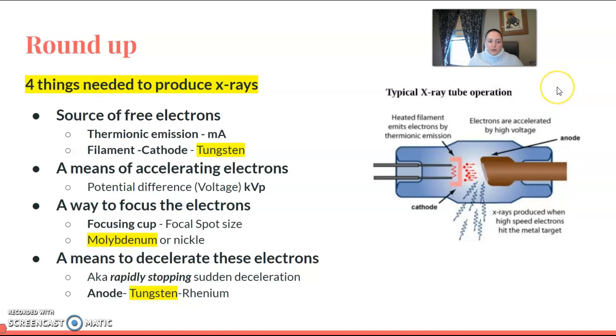So that's where we're starting. We need four things: a source, which is our filament at the cathode end (thermionic emission, heat, MA); a means of accelerating those electrons (KVP); a way to focus them, the focusing cup (usually molybdenum); and a way to decelerate or stop them—the anode or target made of tungsten.